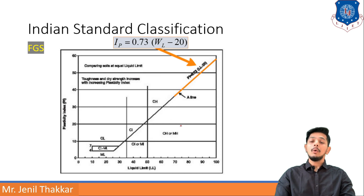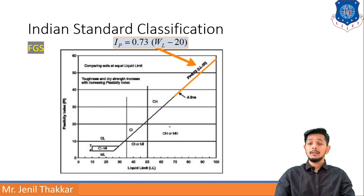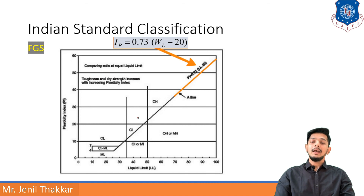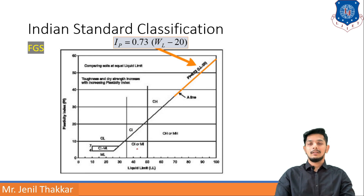Moving forward, if the liquid limit is in the range of 40 to 60% and the plasticity index is above the A-line, it will be CI (clay with intermediate plasticity). If it is below the A-line, it will be OI or MI — OI being organic soil with intermediate plasticity and MI being silt with intermediate plasticity.